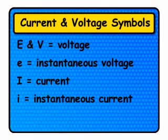The lowercase letter i represents the current at some instant in time. Most direct current measurements, however, being stable over time, will be symbolized with capital letters.